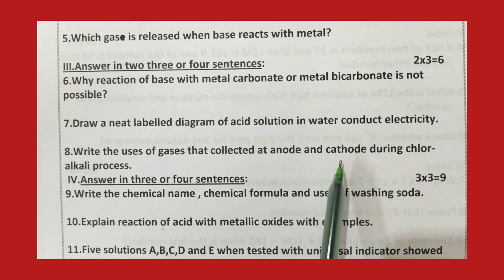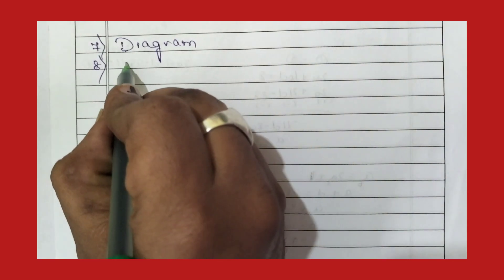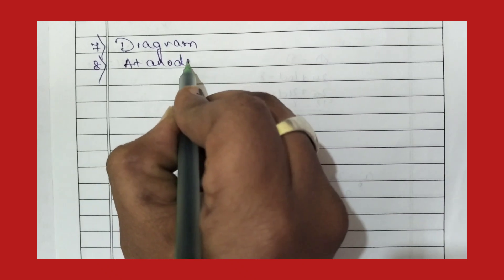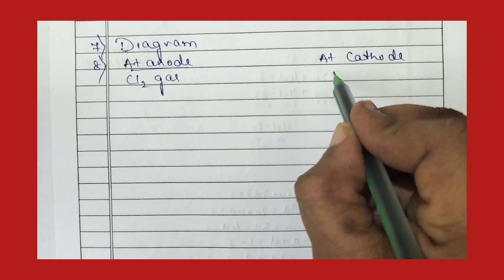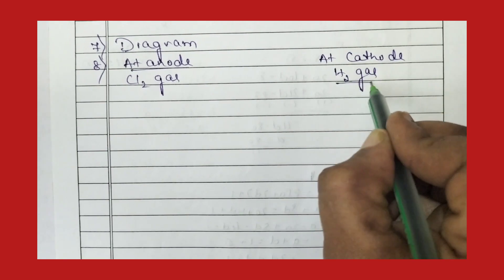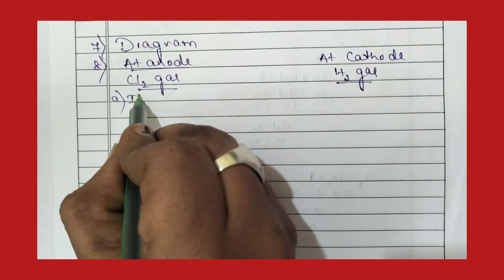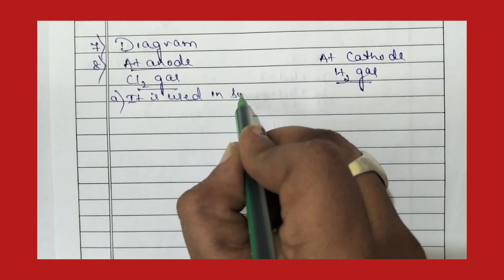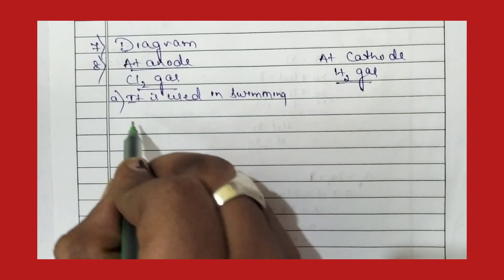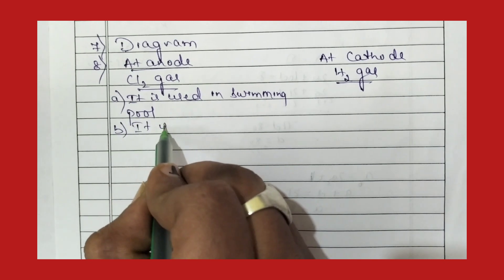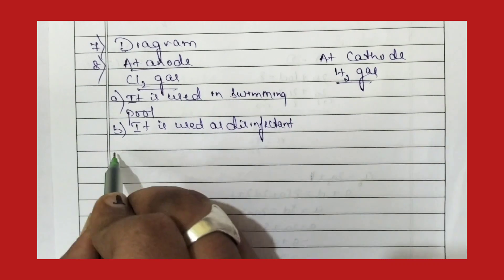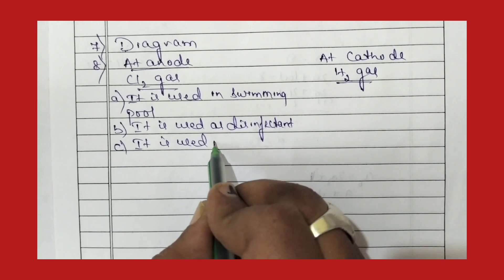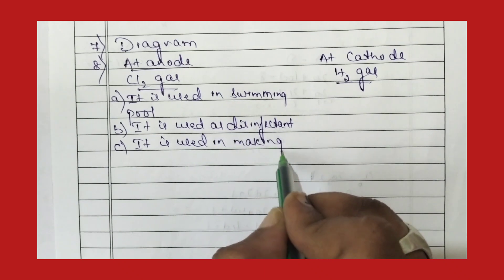Question eight: write the uses of gases collected at anode and cathode during the chloralkali process. At the anode, chlorine gas is collected. The uses of chlorine are: it is used in swimming pools, it is used as a disinfectant, and it is used in making PVC — that is polyvinyl chloride.